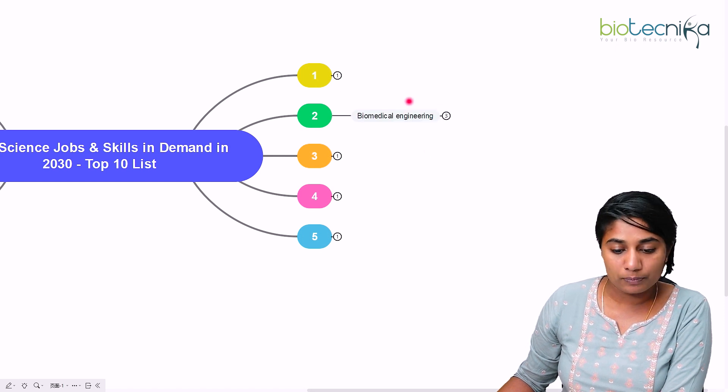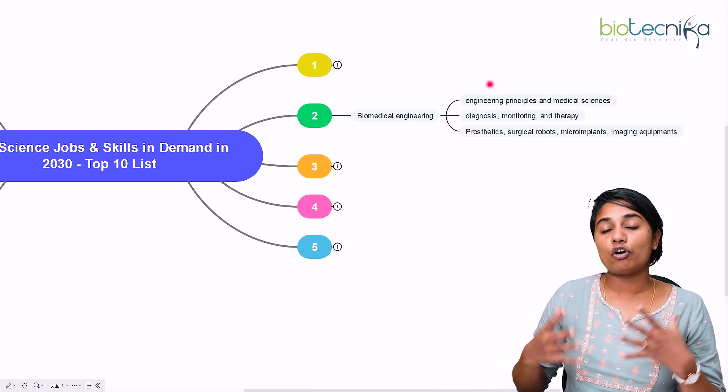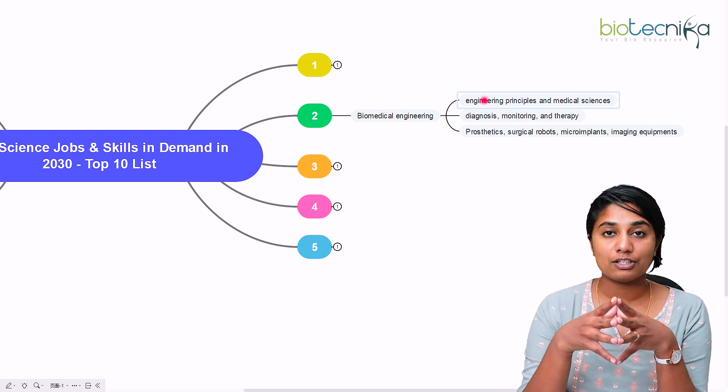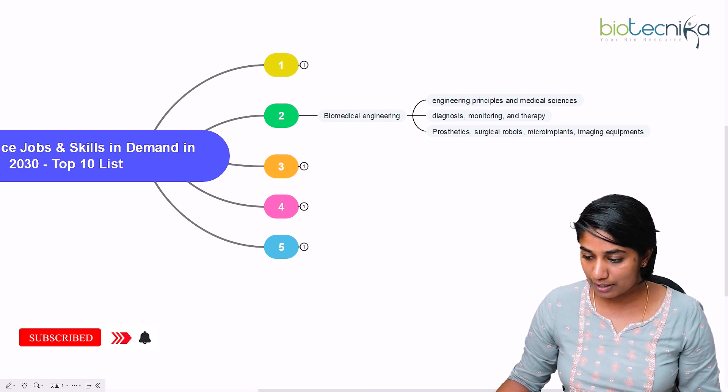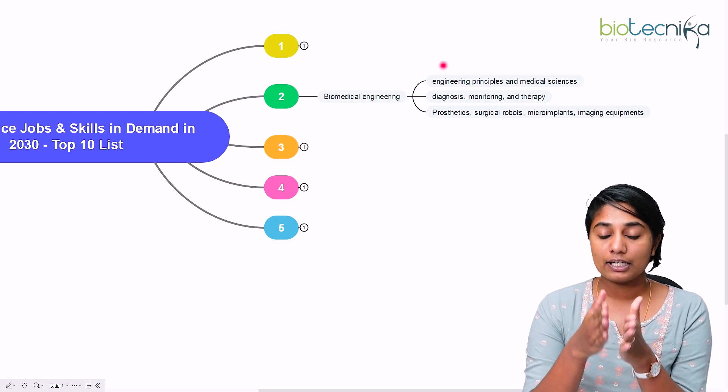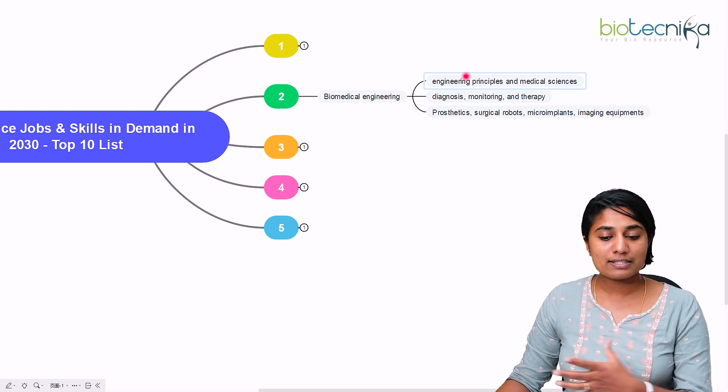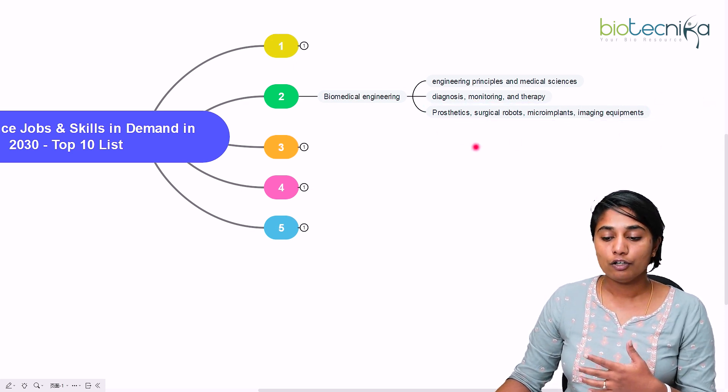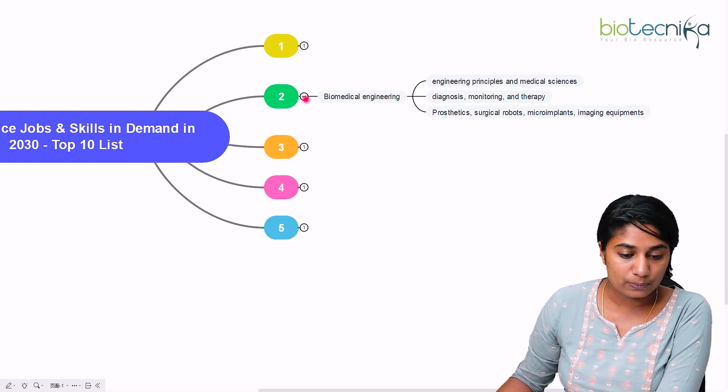The next job that I have for all of you is biomedical engineering. Biomedical engineering is the confluence of engineering principles and medical sciences. Here biomedical engineering is useful in diagnosis, monitoring and therapy of diseases, either chronic or infectious. We use engineering factors and basics as an application towards the medical sciences. Some examples that have come up in recent days are prosthetics, surgical robots, micro implants and imaging equipment. These are a few of the biomedical engineering developments that have happened recently. This is going to boom as well in the future.